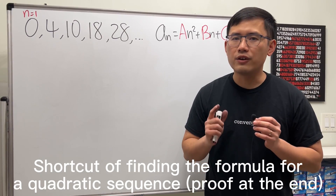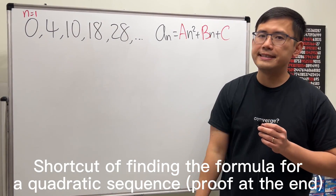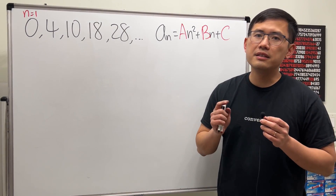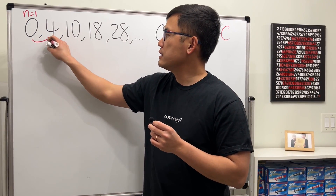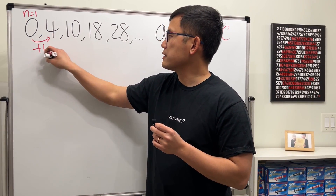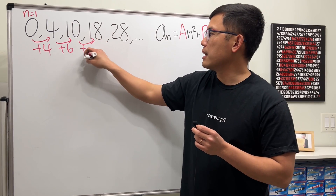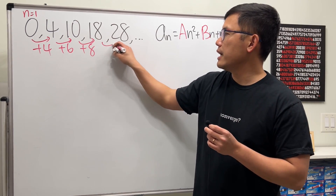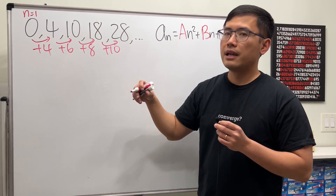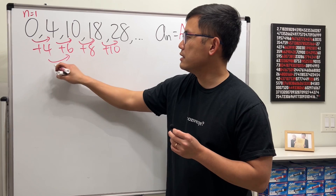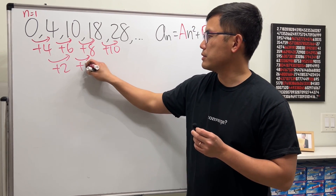I'm going to show you the shortcut for finding the formula of a quadratic sequence. First, we find the first differences: plus four, plus six, plus eight, plus ten. Then we notice the second difference is plus two, plus two, plus two.